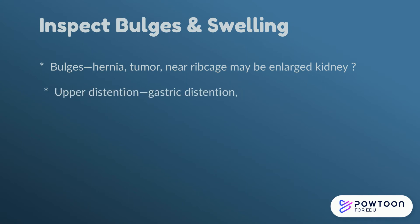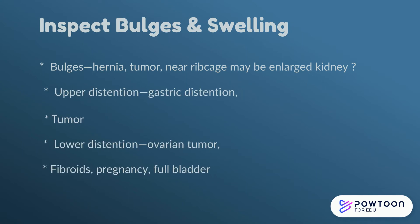Continue your inspection for any bulges and swelling. Some bulges may include hernias and tumors. There also may be some distension at the gastric region. Any tumors in the lower distension may be ovarian issues, or even pregnancy, fibroids, or even a full bladder.